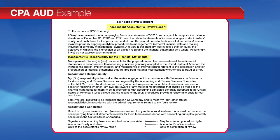The management's responsibility for the financial statements section states that management is responsible for the preparation and fair presentation of the statements in accordance with the applicable financial reporting framework. This responsibility includes designing, implementing, and maintaining internal control relevant to the preparation and fair presentation of financial statements that are free from material misstatement, whether due to fraud or error. The accountant's responsibility section states that the accountant's responsibility is to conduct the review in accordance with SARs, states the accountant's belief that the evidence obtained provides a reasonable basis for the conclusion, and that the accountant is required to be independent and meet other ethical responsibilities. The final section is headed 'Accountant's Conclusion' and states the accountant's conclusion and identifies the country of origin of those accounting principles, if applicable.